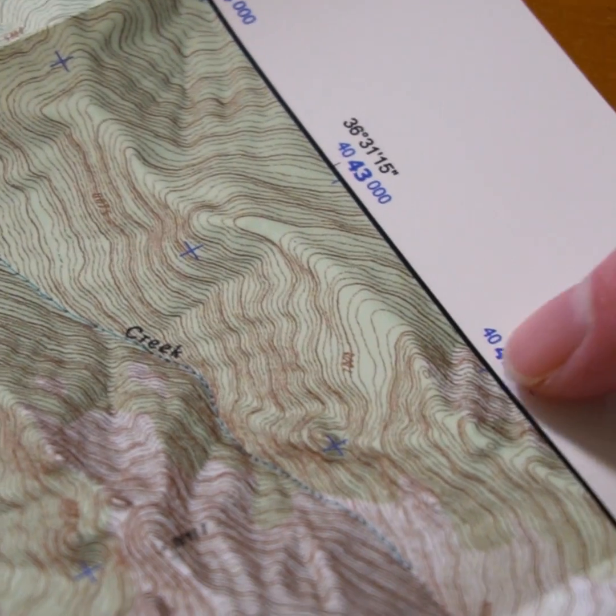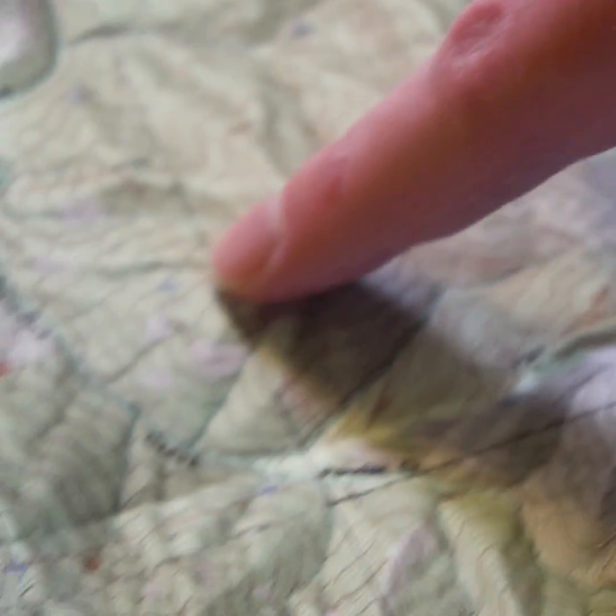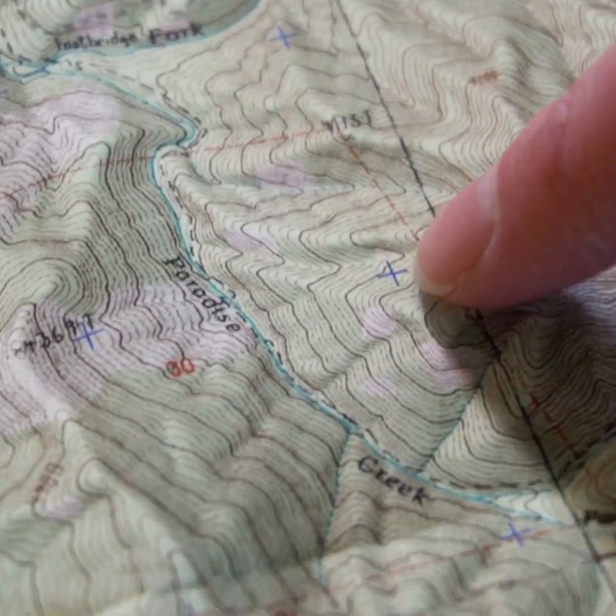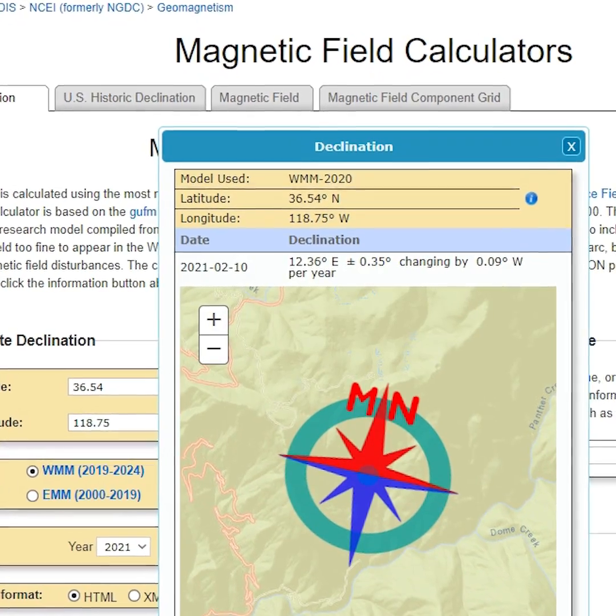You can align your compass with the edge of the map or with the blue UTM grids or tick marks, and this is the number you want to use. Now, things get confusing sometimes when you are looking at the difference between magnetic north and true north. If you plug this location into an online declination tool, you'll probably get a number around 12 degrees.